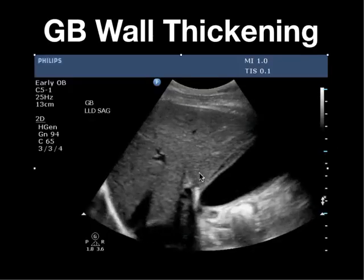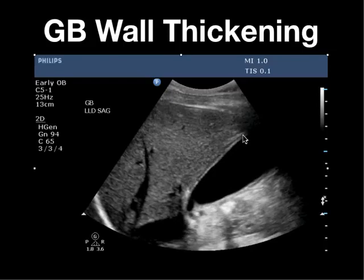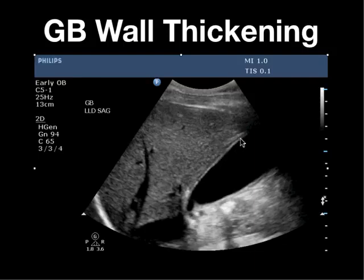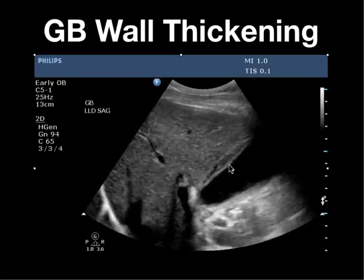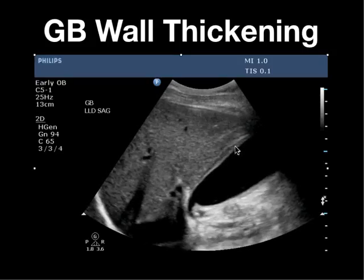Here's a patient with gallbladder wall thickening. You can see the wall, but it's not uncommon to see a central hypoechoic area in the mid-portion. At first glance you may want to say this is pericholecystic fluid, but you really want to trace the whole outline of the gallbladder. This was the outer wall of the gallbladder — this was just some edema in the mid-portion, so there was no pericholecystic fluid, just wall thickening.